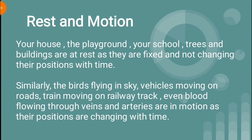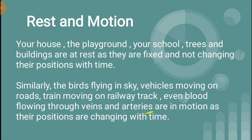Now we will start our chapter on motion with two basic terms: rest and motion. When we ask what do we mean by rest and motion of an object, you might answer that your house, the playground, your school, trees, and buildings are at rest because they are fixed and not changing their position with time. Similarly, birds flying in the sky, vehicles moving on a road, trains running on a railway track, and even blood flowing through veins and arteries are in motion because they are changing their position with time.